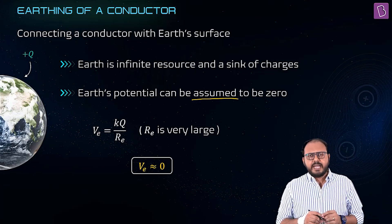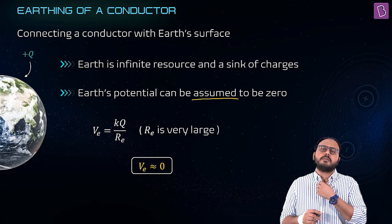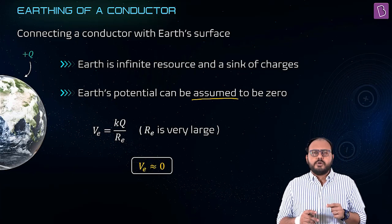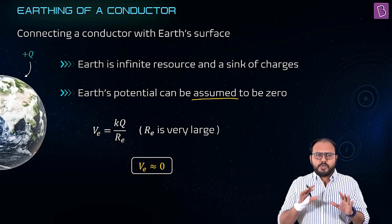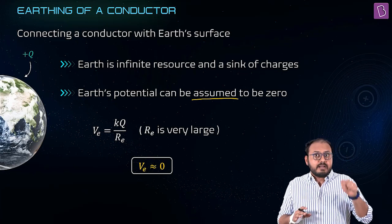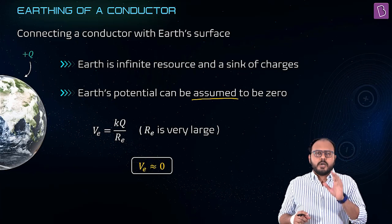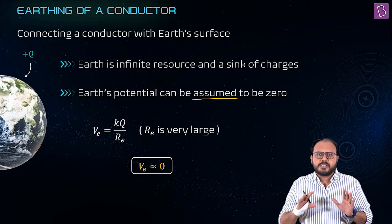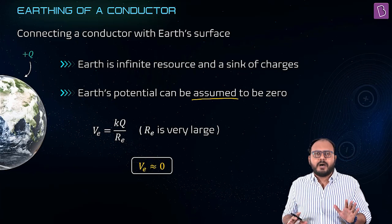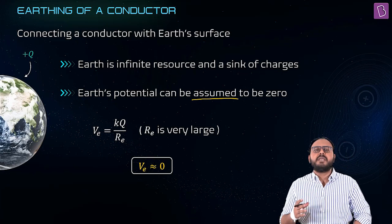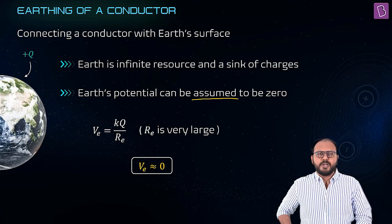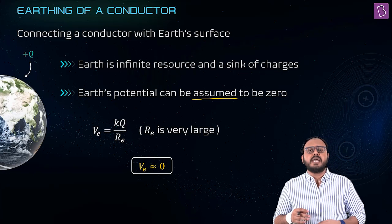If I connect a conductor with earth, what do I ensure? I ensure that after some time the potential of that conductor becomes equal to the potential of earth. So earthing simply means the potential of both parties - the conductor and the earth - becomes equal.